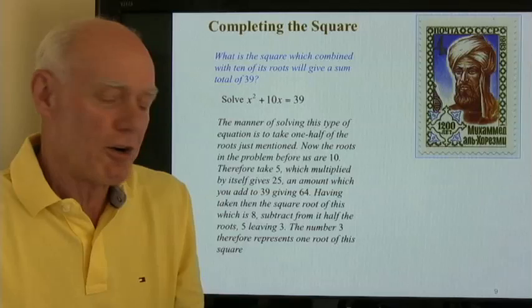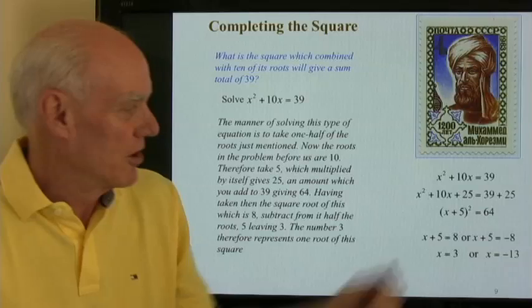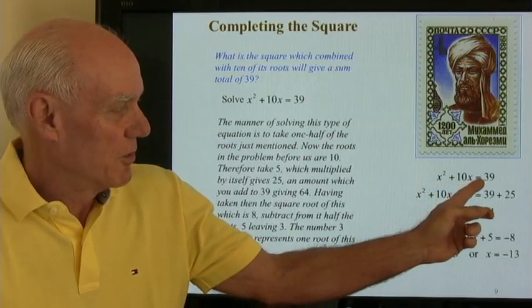Okay, so that's al-Kharizmi's solution to this problem. Here is what it looks like in our notation. x squared plus 10x equals 39.